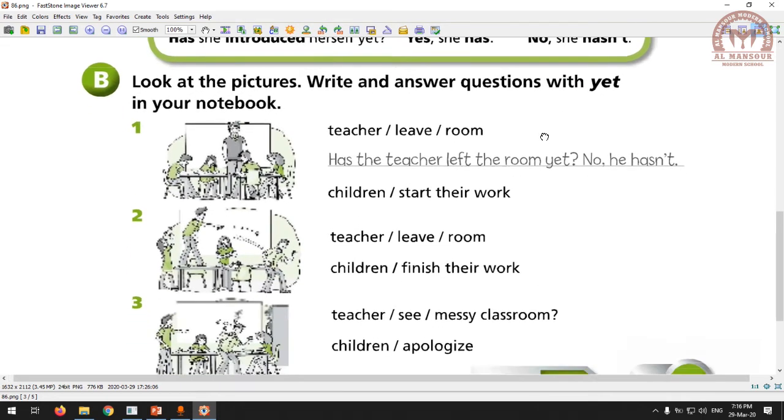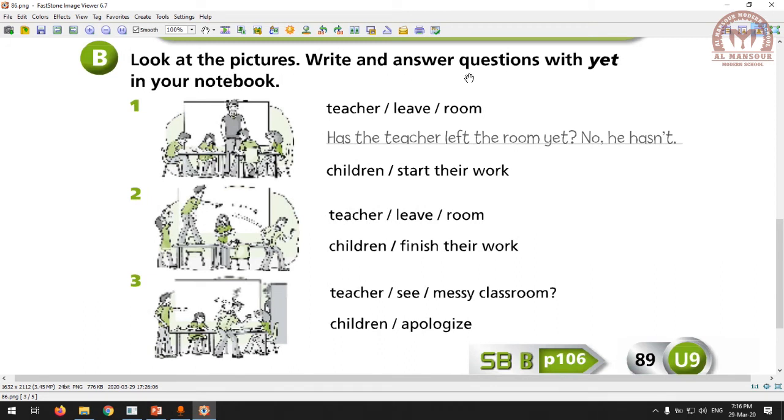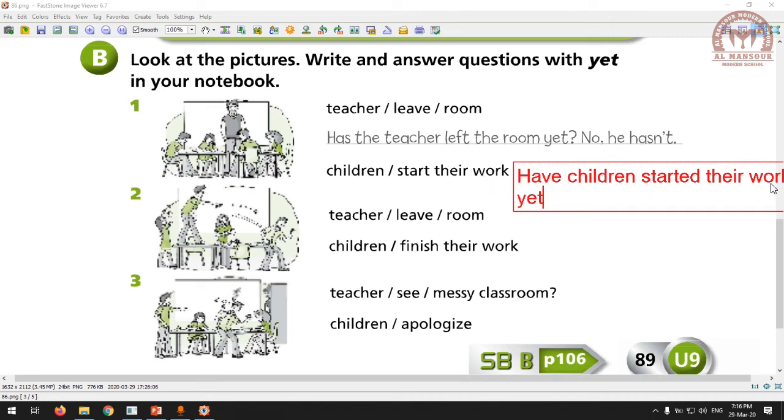Look at the pictures. Write and answer questions with yet in your notebook. I'm going to do one for you. Teacher, leave, room - we're going to make a question using present perfect using these words: Has the teacher left the room yet? No, he hasn't. We're going to do the same for the second sentence. Have children started their work? Have the children started their work yet? I'm going to answer - look at the picture. Yes, they are working, so yes they have. You can do the rest by yourself.